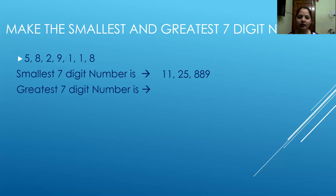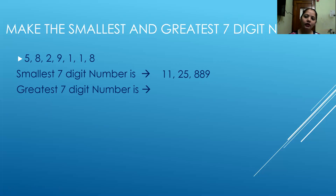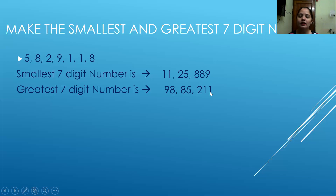Similarly, when we are framing the greatest seven digit number, I will start from the greatest digit, which is nine, and move on to the other digits in descending order. This is how my greatest seven digit number is formed.